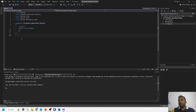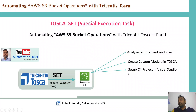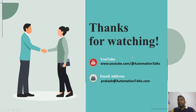Two settings done: references added and AssemblyInfo updated with Engine ID. In the next session we'll write the actual code in the class file. To summarize this video: we analyzed and finalized requirements, created custom modules in TOSCA, set up the C# project in Visual Studio, added Assembly Info with Engine ID, and added the required references. Next session we'll start writing the Special Execution Task code. Thanks for watching!